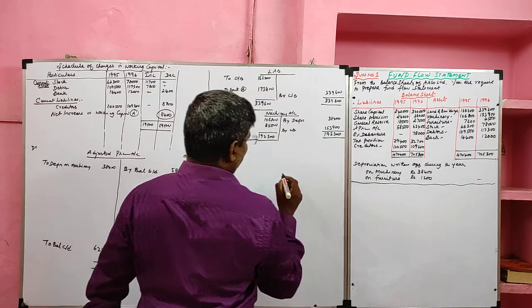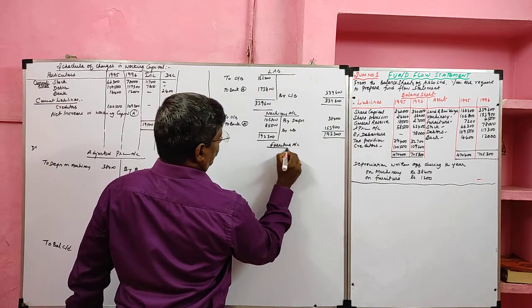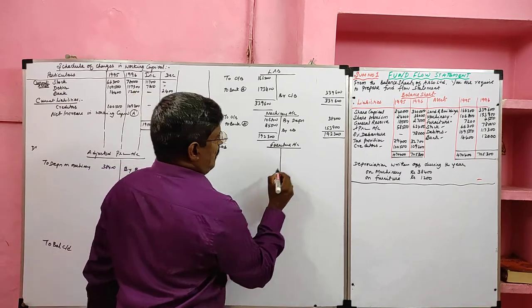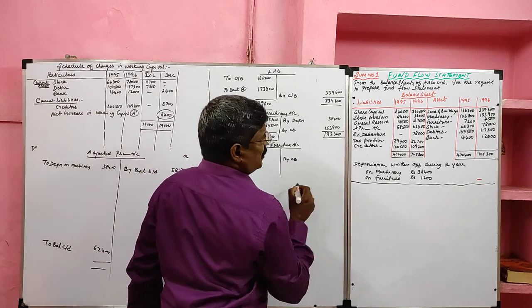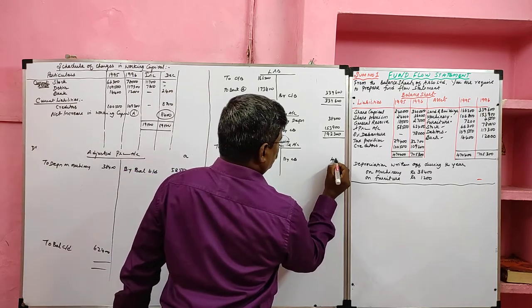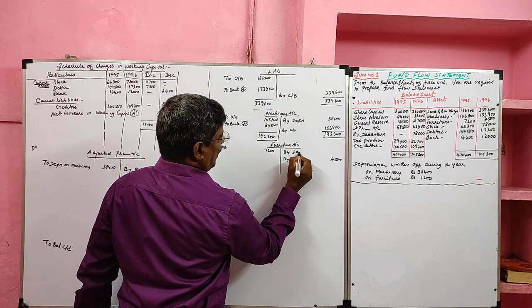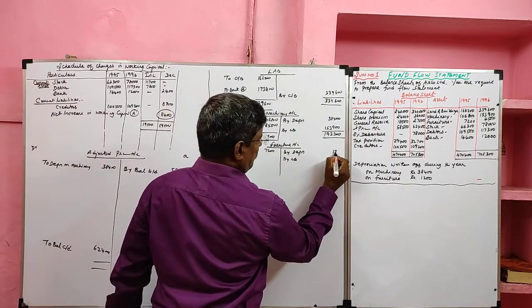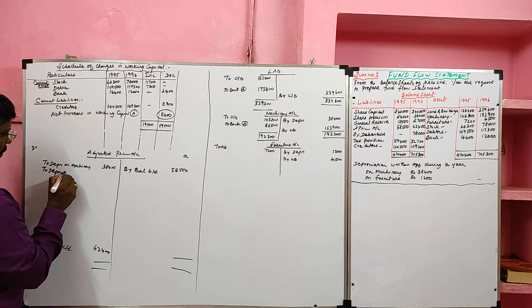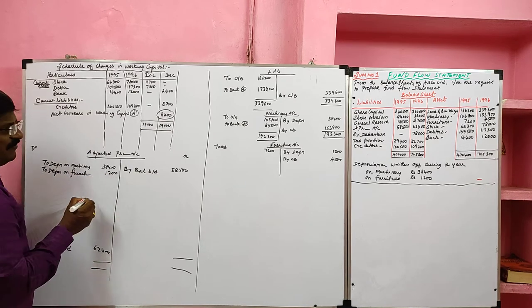Then furniture, also an asset: opening balance debited 7,200, closing balance 4,500. It has an adjustment — current year depreciation of 1,200 is credited to the furniture account and debited to the adjusted profit and loss account as depreciation on furniture.